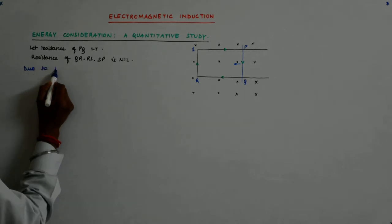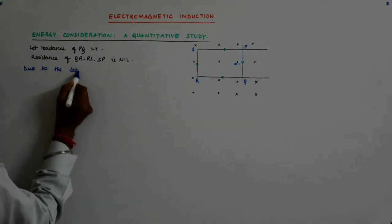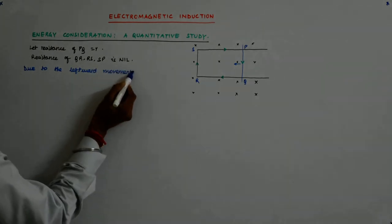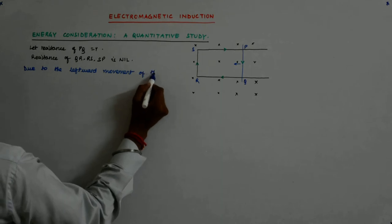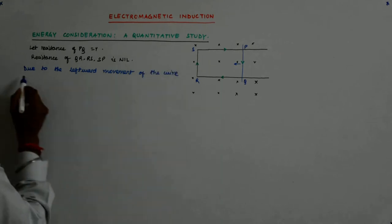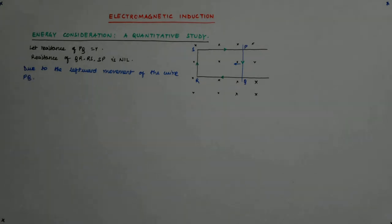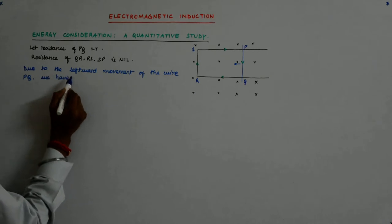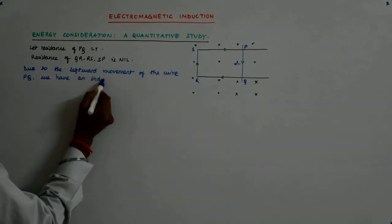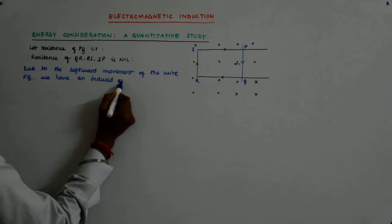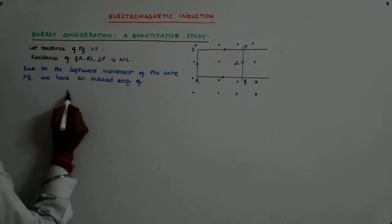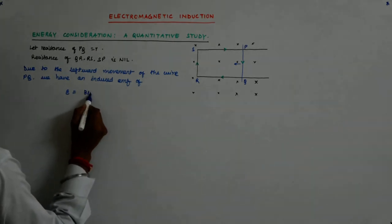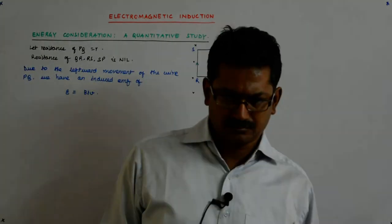So, due to the leftward movement of the via PQ we have an induced EMF of how much? of BLV that we had derived.